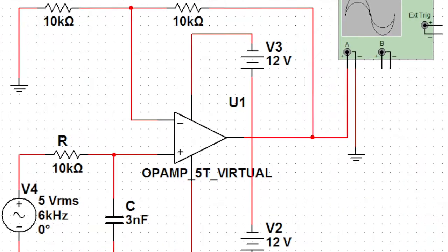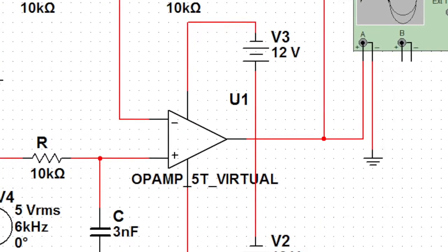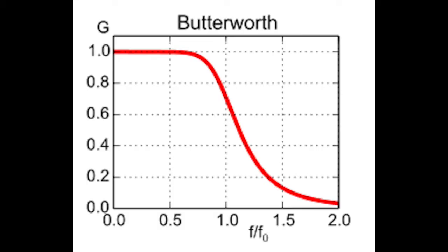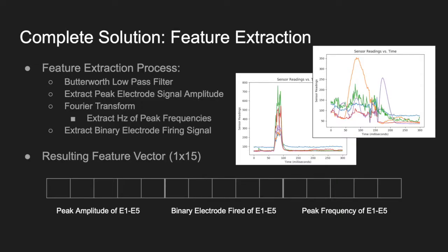The feature extraction process took a few different steps. First, the data was filtered through a low-pass Butterworth filter with the peak frequency allowed being 150 Hz, which is the typical max for EMG signals. With this, the high frequency noise from the environment was removed. For each electrode, the peak signal amplitude was extracted and included in our feature vector. We determined whether each electrode fired or not and identified this as a binary signal.